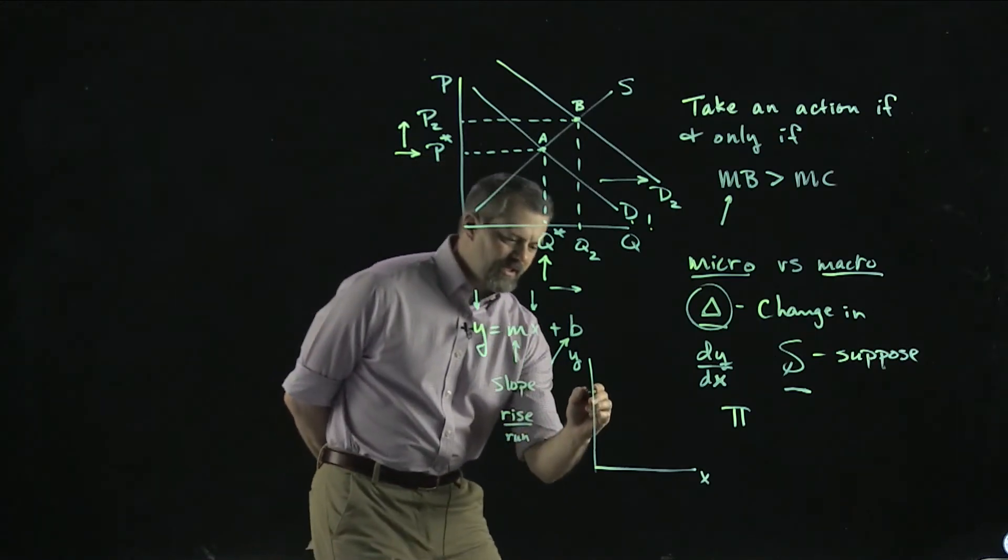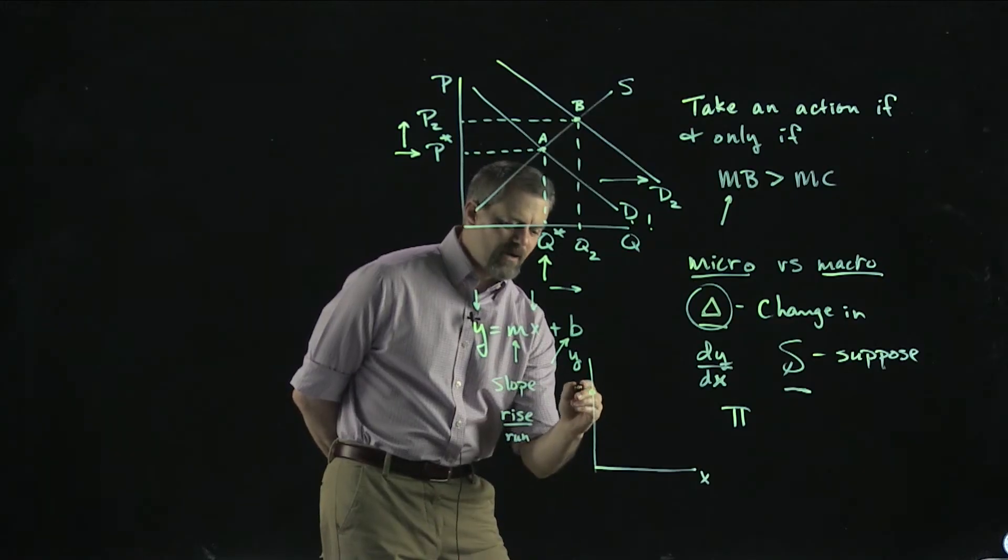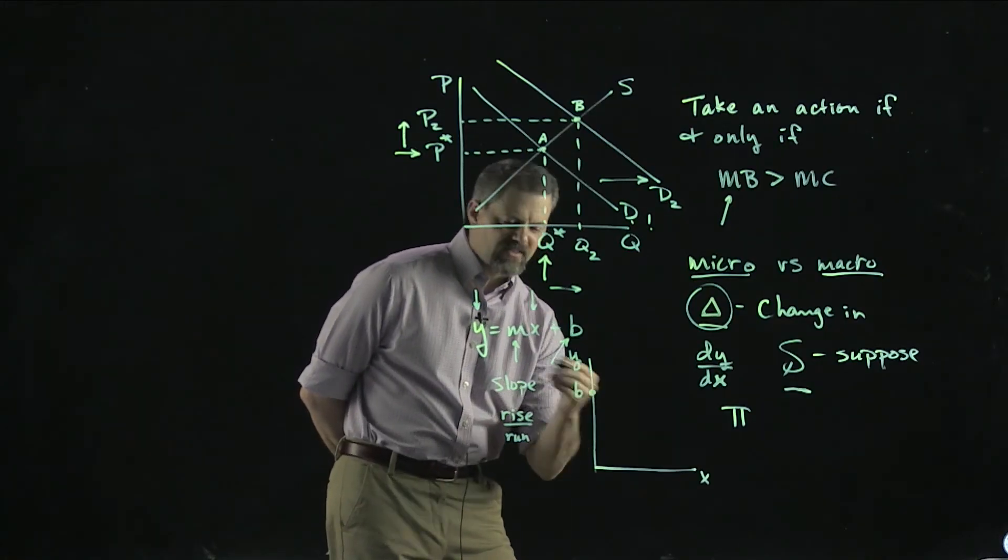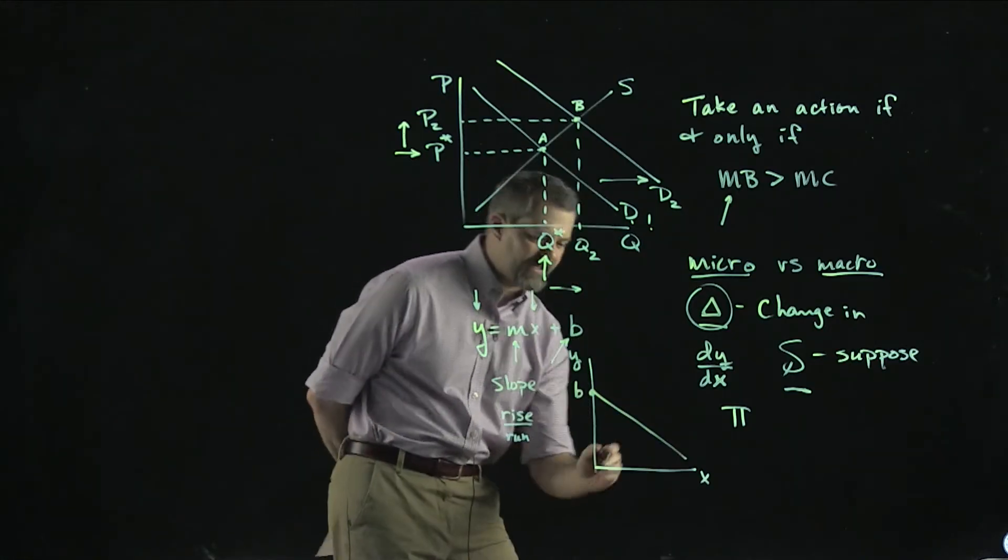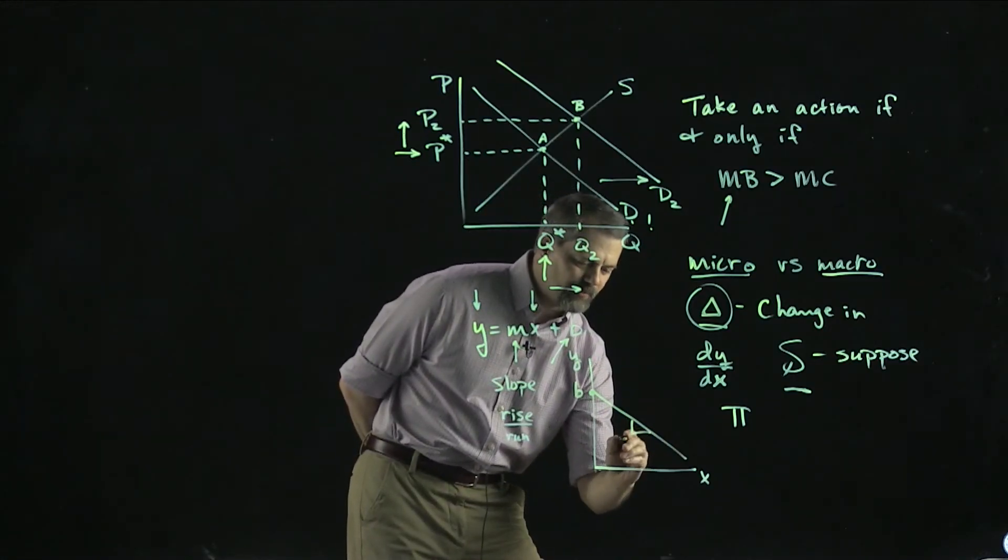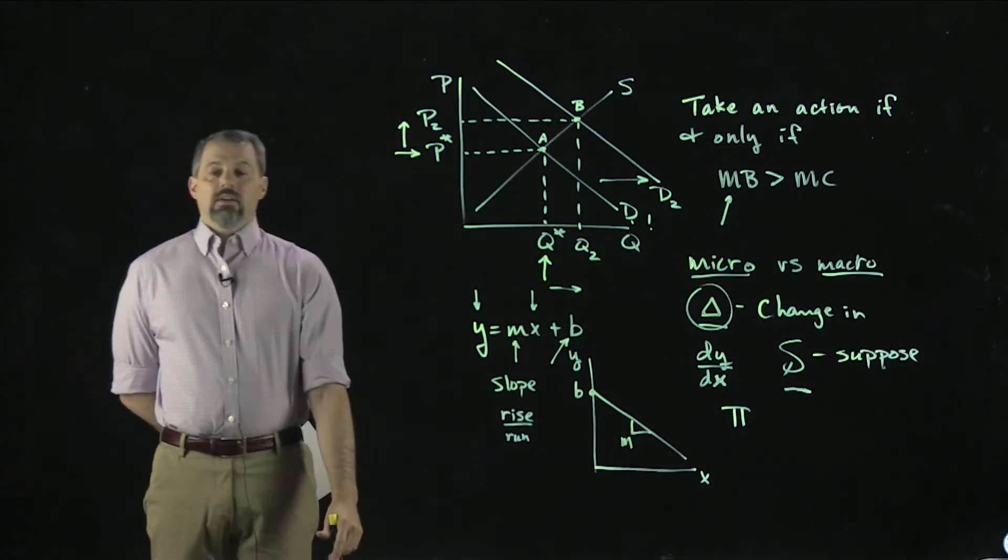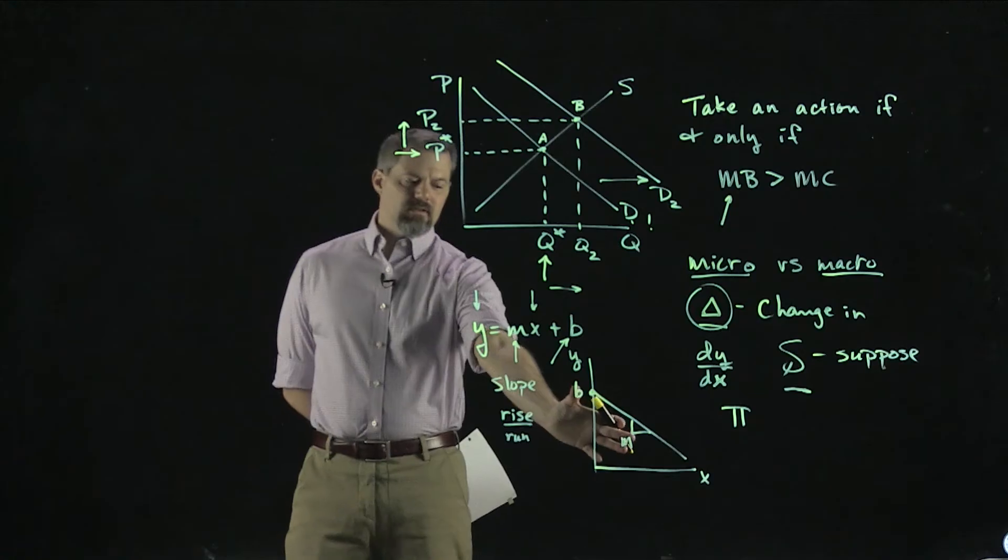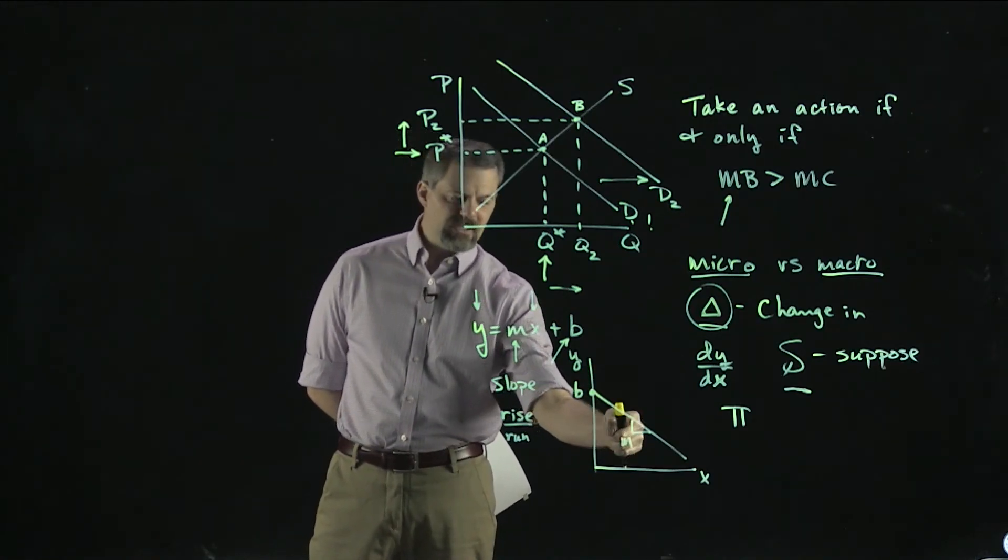Over here, wherever this line hits the vertical axis, that would be b. Let's give it a negative slope like a demand curve would have. If this thing comes down here like this, the slope is right there. There's m.